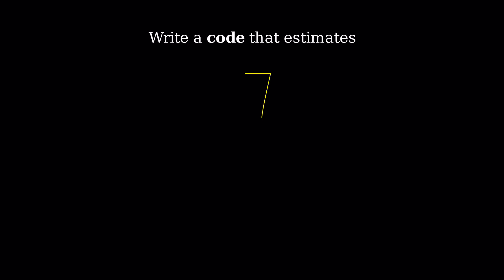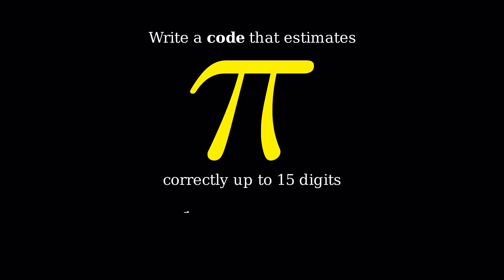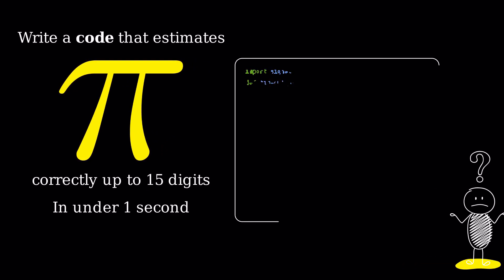Write a code that correctly estimates pi up to 15 digits in under one second. You have seven minutes at the end of which you should provide the code.